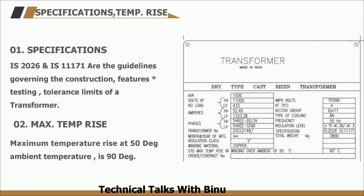Next are the specifications, showing compliance of the transformer with IS2026 and IS1171. These are the guidelines governing the constructional features, testing, and tolerance limits of the transformer. It can also be seen that the maximum rise in winding temperature will be 90°C at an ambient temperature of 50°C.